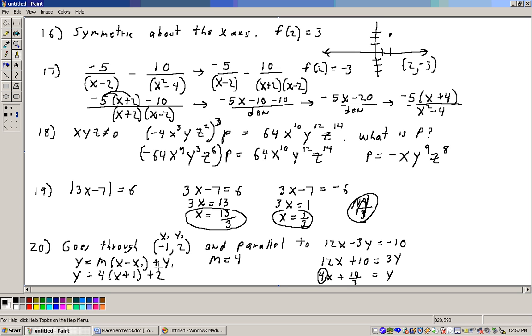Now simplifying this a little bit, we would get y equals, take the 4 through, and you get 4x plus 4, 4 times 1 is 4, plus 2 more makes 6. So y equals 4x plus 6, and that's answer E, and that's that CLM section done.